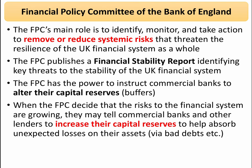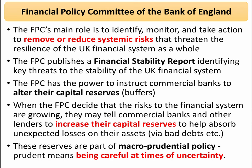When the FPC decides that risks to the financial system are getting bigger, they may well tell the commercial banks — including the main high street banks, other lenders, and specialist mortgage lenders — to increase their capital reserves. That means they have more reserves, like a buffer stock. If banks make unexpected losses on assets or there's an increase in bad debts — sometimes called non-performing loans — the banks will be able to absorb those losses without threatening their own survival, and without wider risks for depositors and savers. These capital reserves are part of macro prudential policy.